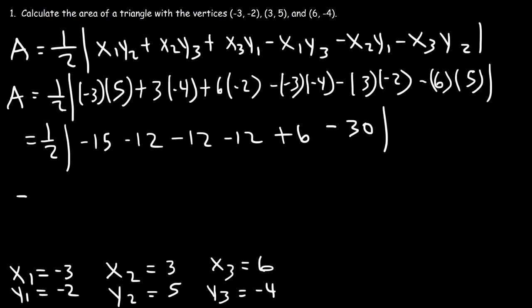Now let's simplify the expression. First, negative 15 minus 12, that's negative 27. Then negative 12 minus 12 is negative 24. And 6 minus 30, which is also negative 24.